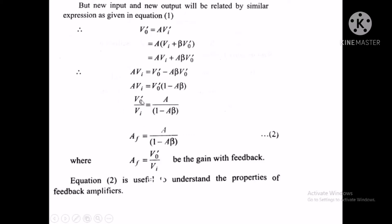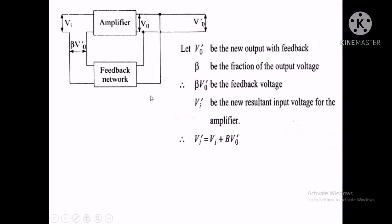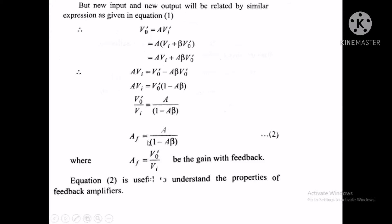Since output upon input is the gain, the gain with feedback Af equals V0' by Vi, which gives Af equals A upon 1 minus A beta. This is equation number 2, the gain with feedback. Here A is the gain without feedback, and beta is the fraction of output that is fed back. So the total gain with feedback equals gain without feedback upon 1 minus A beta.